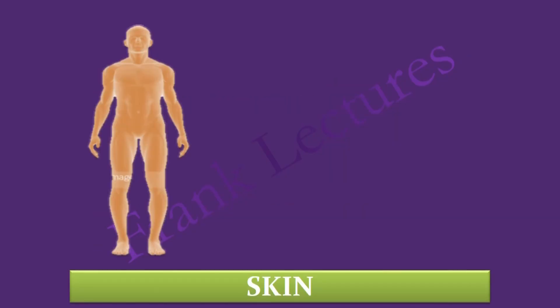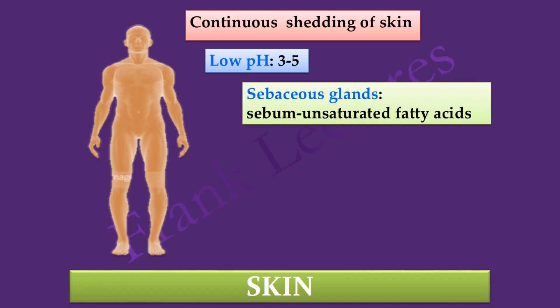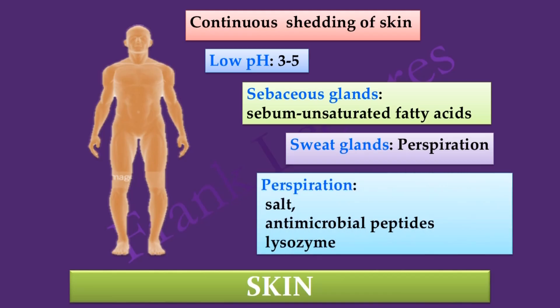So we saw that skin is a major barrier to pathogens. The contributing features are the continuous shedding of the skin, its low pH, sebaceous glands which produce sebum, and sweat glands which produce perspiration. All these features make skin a major barrier against pathogens.